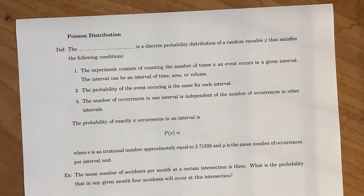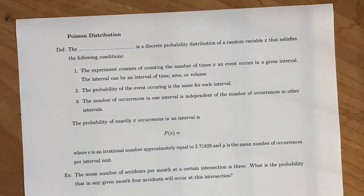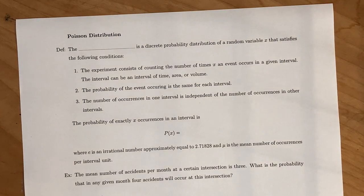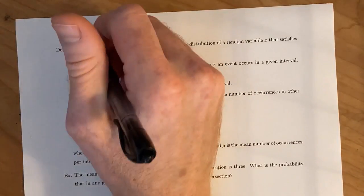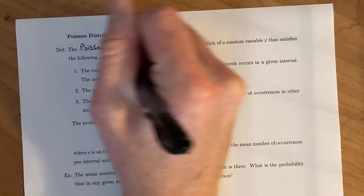This last distribution we're going to look at is kind of weird because it's technically a discrete probability distribution that uses almost a continuous time or an interval to work with. It's called a Poisson distribution.